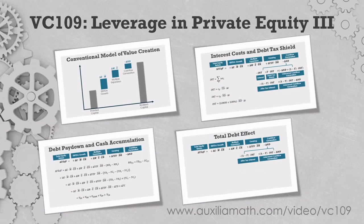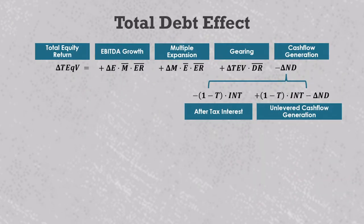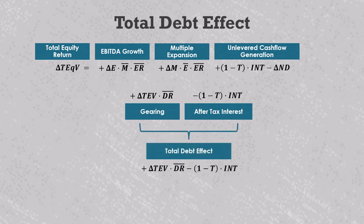I will add another section here to respond to a question about how one might measure the total impact of debt in an LBO, where you include the impact of interest and debt's mechanical amplification of equity gains and losses into a single value driver. We can go back to the last model where we broke cash flow generation into the after-tax interest cost and the unlevered cash flow generation. We will drop the traditional cash flow generation term since it's redundant and bring gearing down here. We can add these two together to create a new value driver called the total debt effect, which is equal to the product of the change in enterprise valuation and average holding period debt ratio, minus the after-tax interest cost.